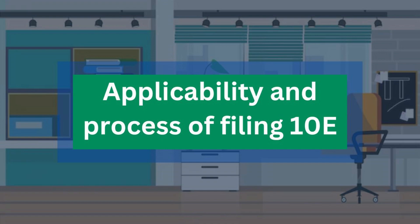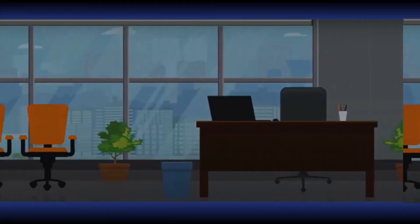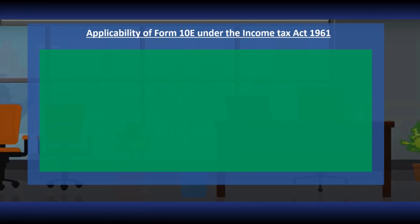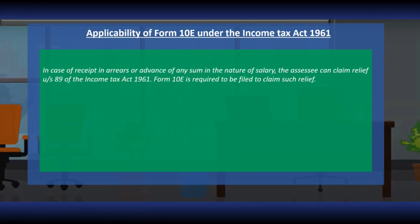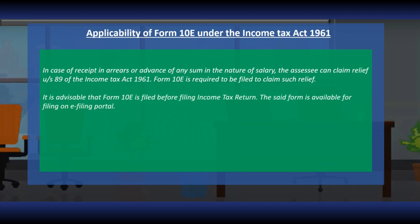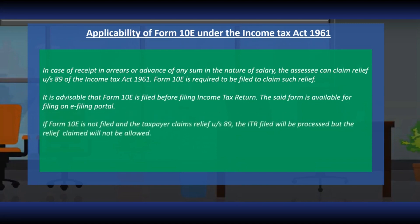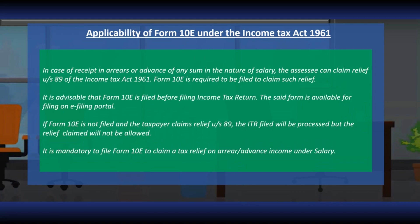This video is on the applicability and process of filing Form 10E. Form 10E is applicable under Section 89 of the Income Tax Act in case of receipt in arrears or advance of any sum in the nature of salary. The assessee can claim relief under Section 89 of the Income Tax Act. Form 10E is required to be filed to claim such relief. It is advisable that Form 10E is filed before filing the income tax return. The said form is available for filing on the e-filing portal. If Form 10E is not filed and the taxpayer wants to claim a relief under Section 89, the ITR filed will be processed but the relief claimed will not be allowed. Therefore, it is mandatory to file Form 10E to claim a tax relief on arrear or advance income under the head salary.